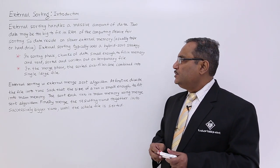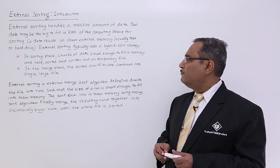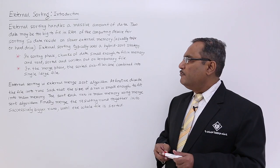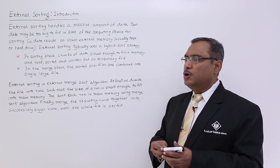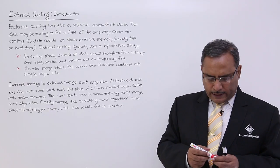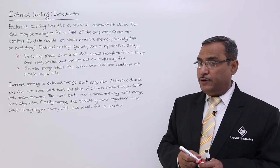In sorting phase, chunks of data small enough to fit in memory are read and sorted and written out onto the temporary file. For the external sorting here we are having mainly two phases.